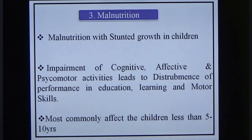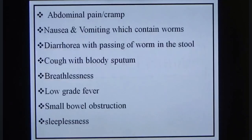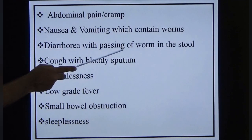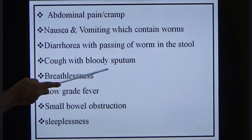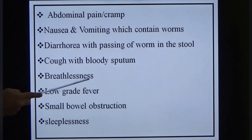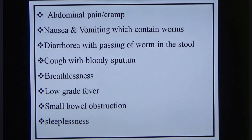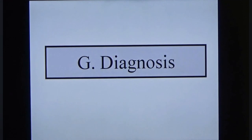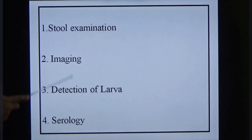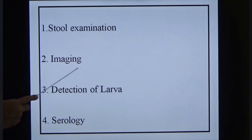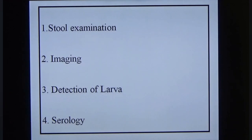Clinical features include: abdominal pain, nausea and vomiting, diarrhea with passing of worms in stool, cough with bloody sputum, breathlessness, low-grade fever, small bowel obstruction, and sleeplessness. Diagnosis is made through four approaches: stool examination, imaging, detection of larva, and serology.